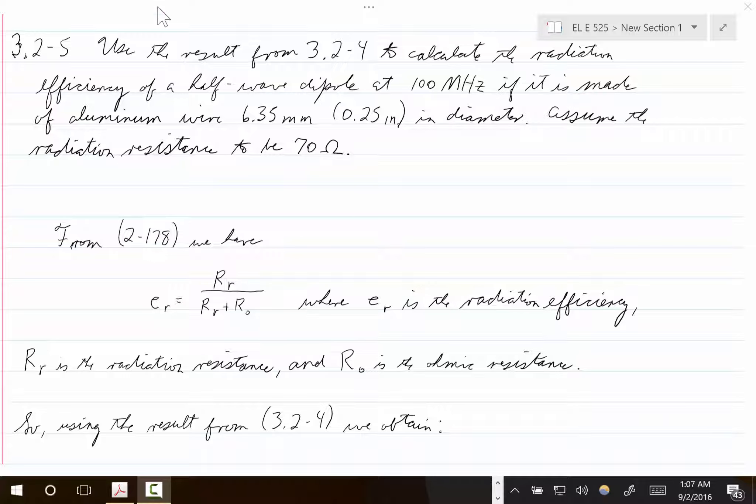Here is the final problem that we were working in video four. It's where we're calculating the radiation efficiency of a half-wave dipole and in this problem we're told that the diameter of the dipole is 6.35 millimeters. But again, that is the diameter.